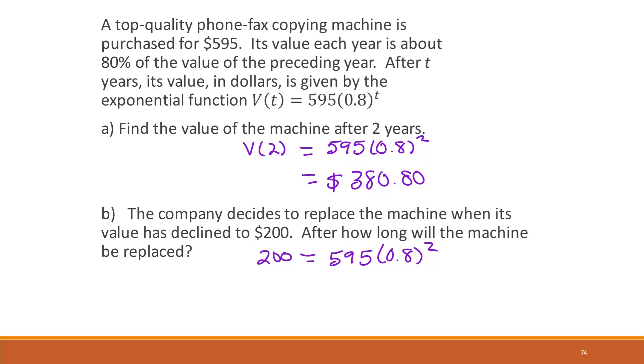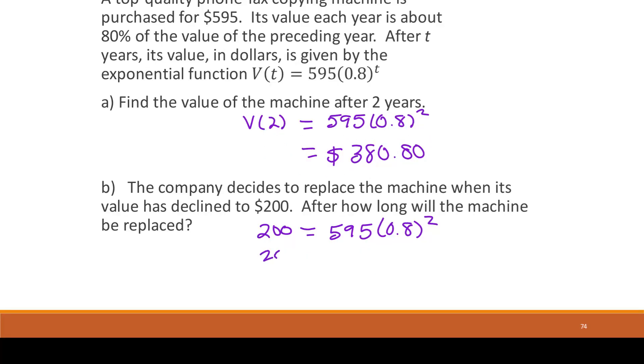So this one works out just like our previous problems have. We can divide and that's not 2, that's t, that's what we're solving for. We use logarithmic rules to give us log base 0.8 of 200 divided by 595 equals t.